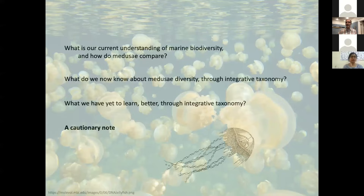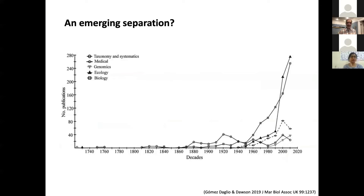This brings me to the cautionary note. Returning to the graph we saw earlier, there seems to be an emerging separation where taxonomy is becoming less popular, while ecology, basic biology, applied biology, medicine, and even genomics are all taking off rapidly — while taxonomy becomes less central.